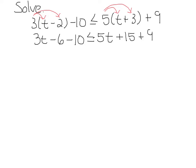The next thing you want to do is simplify on each side as much as you can. Notice that we can combine these two here and these two here. Negative 6 minus 10 is negative 16, and 15 plus 9 is 24.